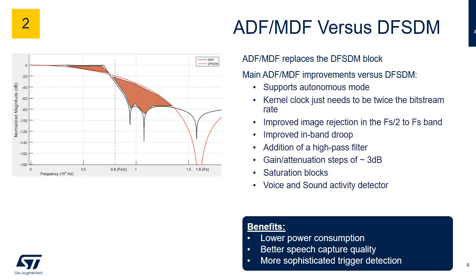The STM32L5 includes a module called DFSDM, which stands for Digital Filter for Sigma Delta Modulators Interface. Let's list the improvements made by ADF and MDF compared to DFSDM. Firstly, ADF and MDF support Low Power Background Autonomous Mode, or LP-BAM, which allows these peripherals to be functional and autonomous in stop modes without any software running. Another clocking benefit is that the kernel clock of ADF and MDF only needs to be twice the bitstream rate, while DFSDM requires a ratio of 4. In the frequency range from half of the sampling frequency to sampling frequency, ADF and MDF improve image rejection.